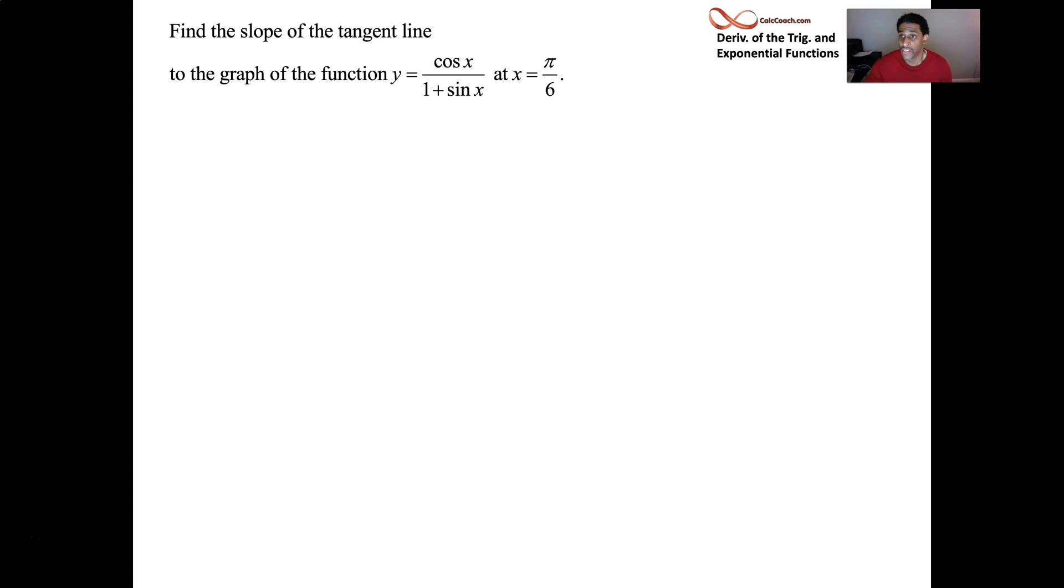So just a good chance to show that we know the quotient rule. Take the bottom and square it, bring the bottom up to the top, take the derivative of the top. Cosine's derivative is negative sine of x. Put a minus sign, leave the top alone, take the derivative of the bottom. 1's derivative is 0, sine x's derivative is cosine x. So we get this expression for the derivative.